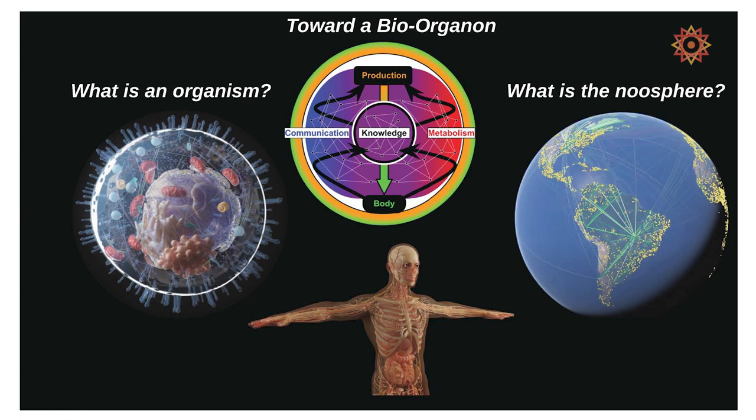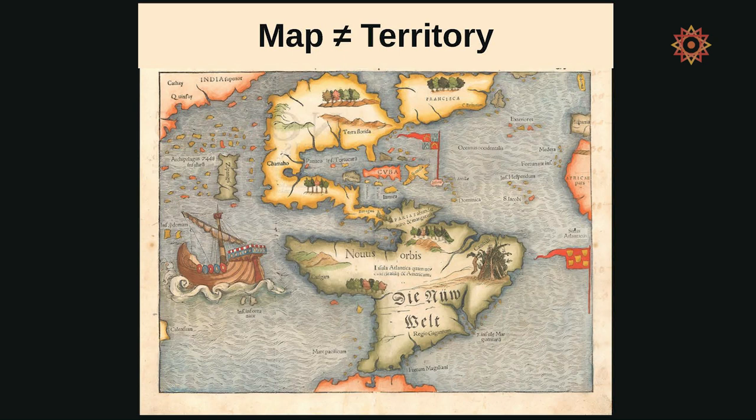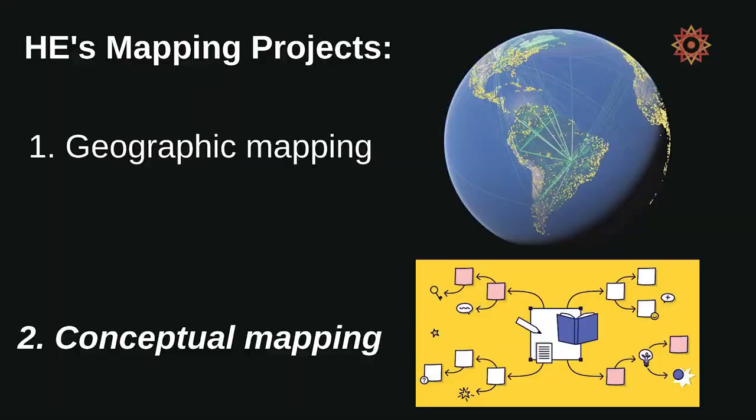I'm going to focus on a specific aspect of the mapping project: an exploration of what it means to be an organism, and developing a conceptual map that can help us with the noosphere. We all know the map is not the territory — but if you're a European explorer, at least having something like this helps you get started. Knowing where the water is, the trees, the mountains — what do you need to bring? That's what I mean by conceptual mapping, starting at a 20,000-foot view of the questions we've been wrestling with at this conference.